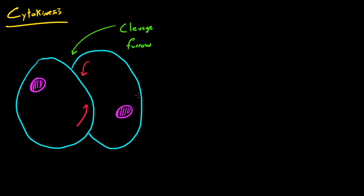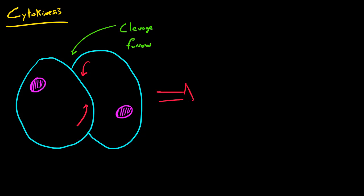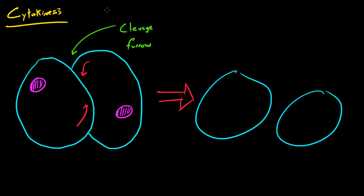What's going to happen is those proteins are going to squeeze the cell and eventually split it in two. So this is what we start with, and what we end up with is two individual daughter cells. The important things to take away are that the cleavage furrow is the area where the indentation forms thanks to the proteins, and those proteins act like a belt around the cell squeezing it and splitting it into two brand new individual daughter cells.